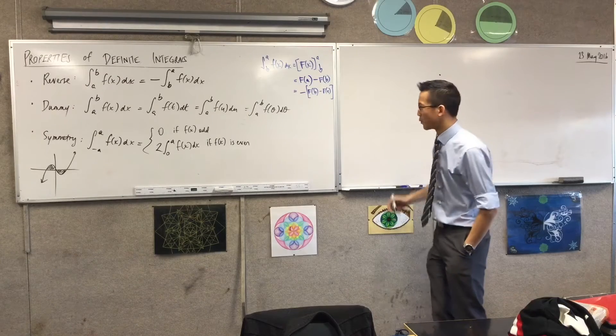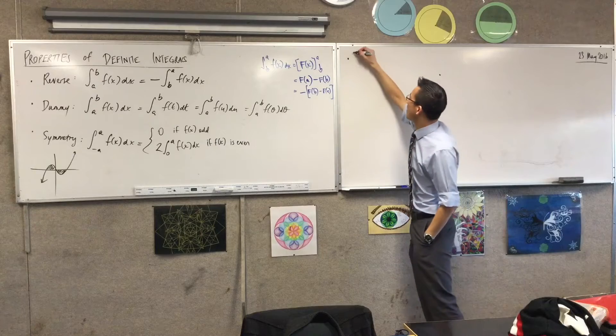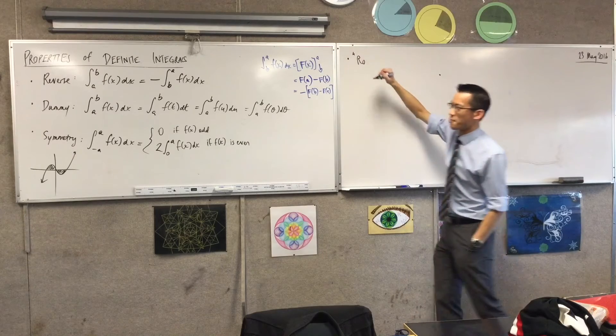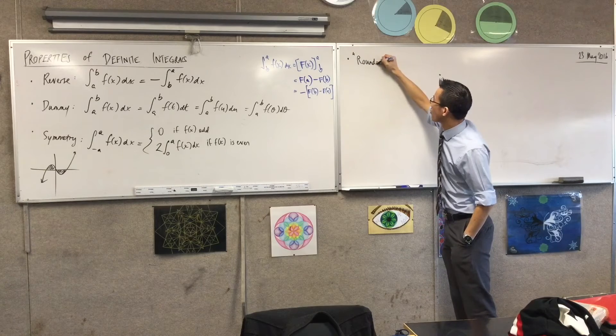The next one is a little bit weird, and so accordingly I've given it a bit of a weird name. I call this property, not the reverse or dummy or symmetry properties, but I call it the round-off property.